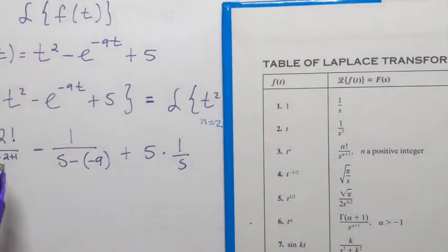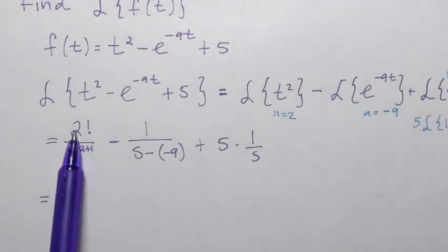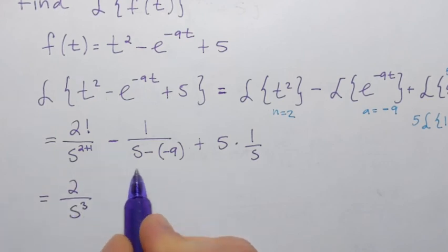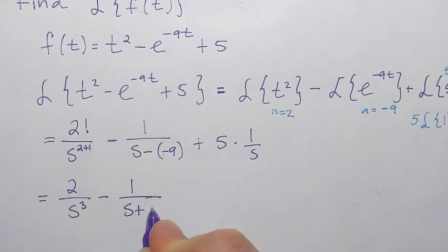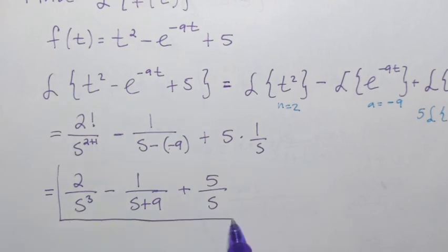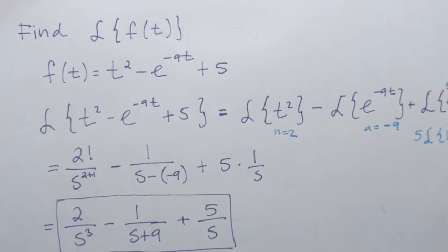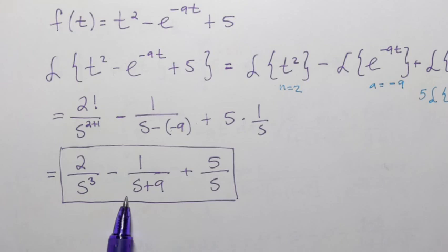And now, as I simplify all that, 2 factorial is 2 times 1, so that's just 2, s to the power 3 in the denominator. Here I have minus 1 over s plus 9. And then plus 5 over s. And that's going to be the answer. So we performed Laplace transform of a given function f of t. And we obtained another function in terms of s. So your final answer should never have t involved. It should be in terms of s.